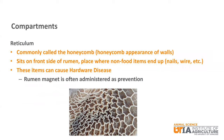The second compartment is the reticulum. It is commonly called the honeycomb because of the honeycomb appearance of the reticulum wall. The reticulum sits in front of the rumen and is the place where non-food items end up after being ingested. This could include nails, wire, and other hardware items. These items can puncture the reticulum wall and cause hardware disease, which could lead to death. Magnets are commonly administered to cattle as a prevention for hardware disease.